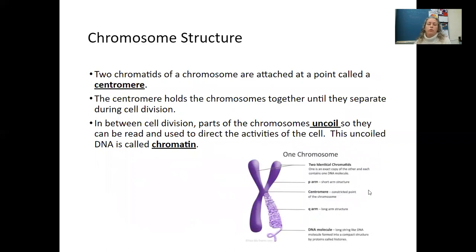Two chromatids of a chromosome are attached at a point called a centromere. The centromere holds the chromosomes together until they separate during cell division. Between cell divisions, parts of the chromosomes uncoil so they can be read and used to direct the activities of the cell. This uncoiled DNA is called chromatin.